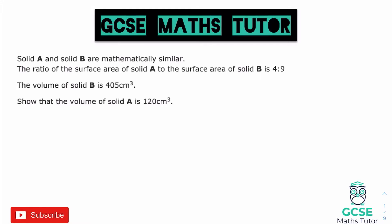For this first question: solid A and solid B are mathematically similar. The ratio of the surface area of solid A to the surface area of solid B is 4 to 9, and the volume of solid B is 405. We need to show that the volume of solid A is 120. We have the ratio of their surface areas, and we need to find the volume. Using a non-calculator method, we need to move between the surface area ratio and the volume ratio.